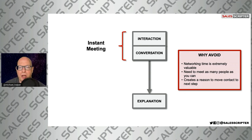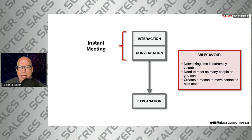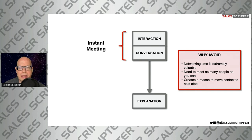If you end up in a good conversation where they're asking good questions, that's a great opportunity to close and move that networking partner to the next step — the conversation — by saying something like, 'Hey, we're getting into a lot of good details here. I want to learn more about what you do. Why don't we pause here, make some new contacts — you should make some new contacts as well — let me get your email address and let's get back together on another day.' What you did there is avoid the instant meeting and close for the next step, starting to build that relationship with that networking partner.